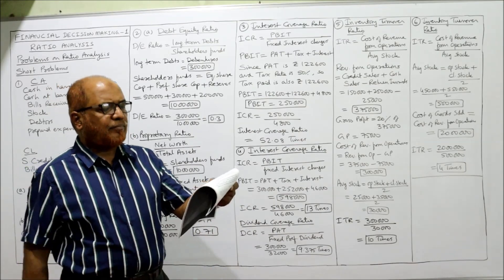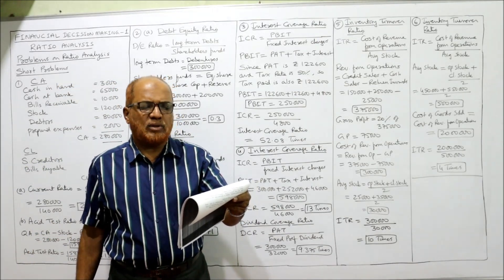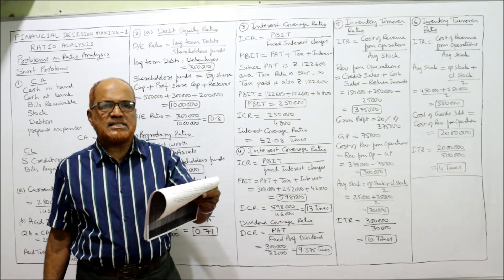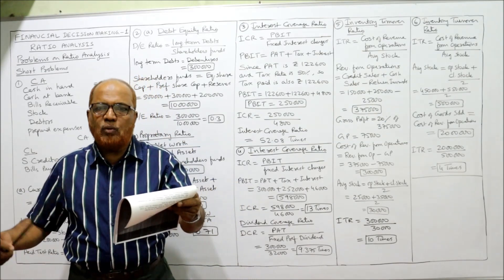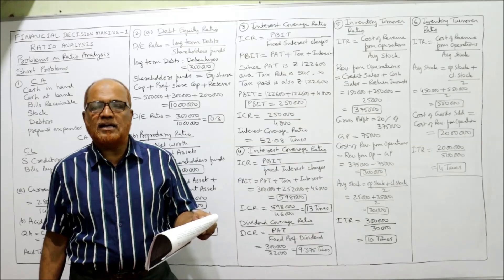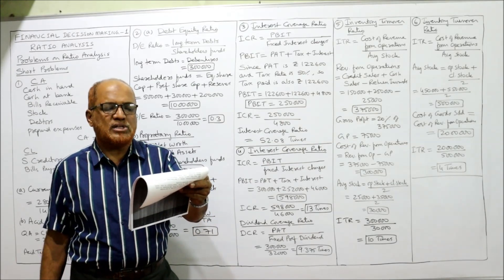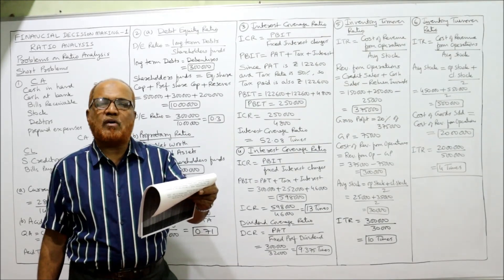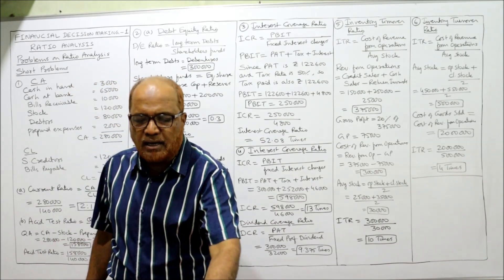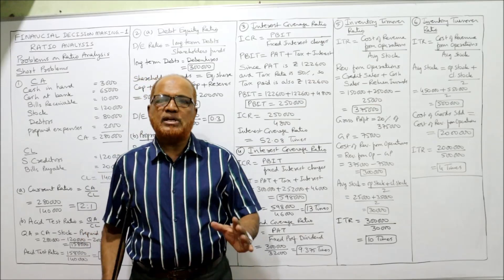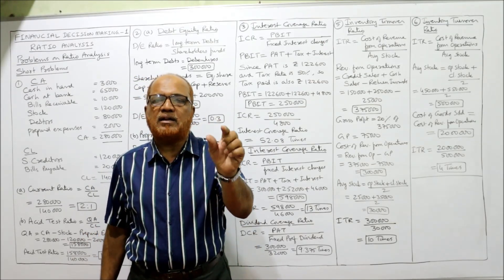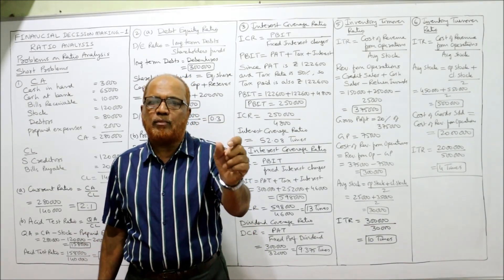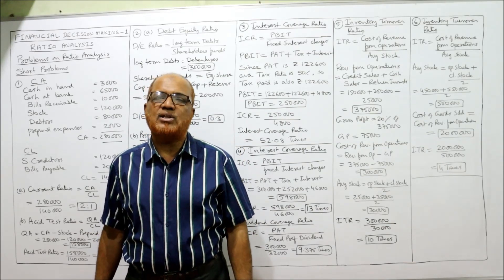Next is the fifth problem. Messrs Rakesh & Company supplies the following information for the year ending 31st December 1989: credit sales 1,50,000, cash sales 2,50,000, return inward (sales return) 25,000, opening stock 25,000, closing stock 35,000. Find the inventory turnover ratio when gross profit is 20%. The formula for inventory turnover ratio is cost of revenue from operations divided by average stock.